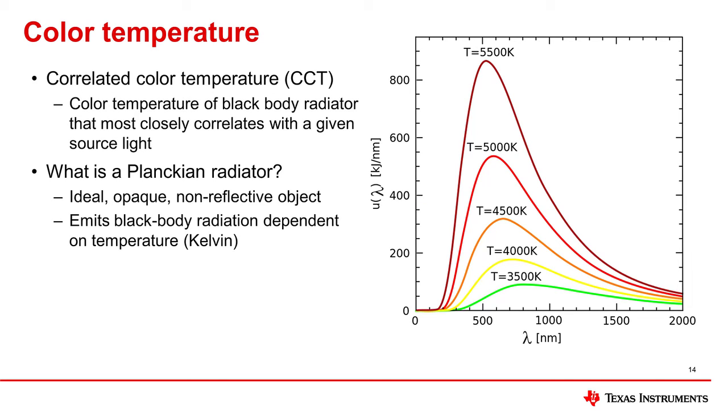Color temperature can be represented within a color space on what is called the Planckian locus. A Planckian radiator is an ideal object that absorbs all light without reflecting anything. The spectrum of Planckian radiation can be seen here as temperature increases. The color of a Planckian radiator that matches a given light source most closely is known as that source's correlated color temperature, or CCT.